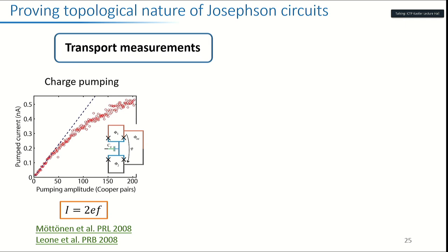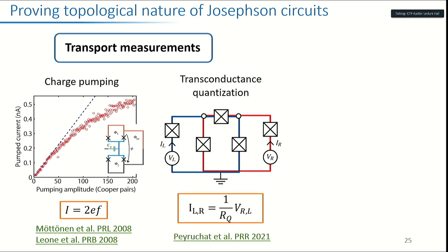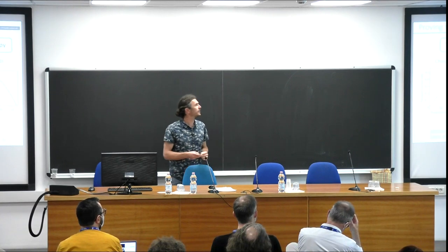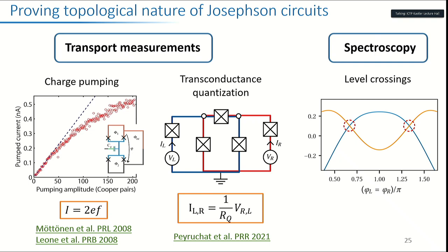People have explored topological properties of Josephson junction circuits for a long time, with charge pumping being one possible phenomenon. We've worked on charge pumping for quite a while, but quantization is not yet high enough for applications. We've also proposed a circuit for transconductance quantization — closing the metrological triangle with Josephson junctions — but that would be a difficult transport experiment. We felt it would be better to measure these degeneracies with spectroscopy, since the degeneracy is an intrinsic topological property of the system, not one induced by a drive.